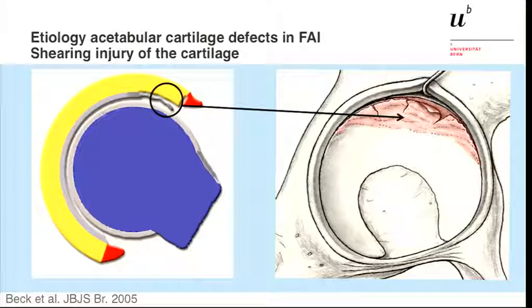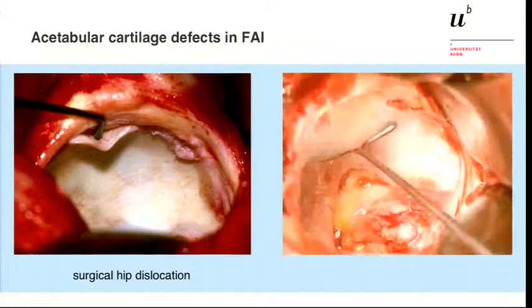So we go in either open or with arthroscopy, we see the defect and then we think: should we do a more complicated treatment with harvesting and replacing the cartilage? Should we just take it away, or should we just leave the bump? The idea is to look at how to proceed and look backwards to find some solutions for the future.